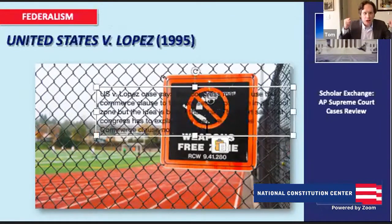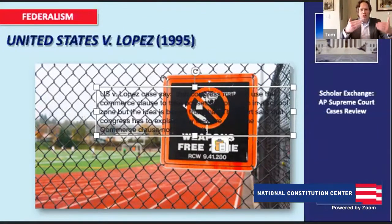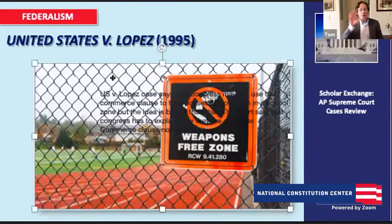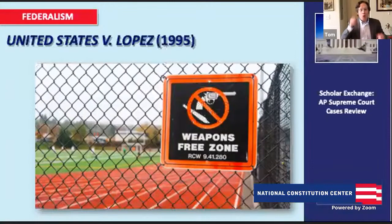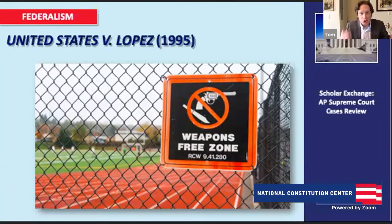Tom Donnelly: The big thing the Rehnquist Court is declaring in Lopez is that the Constitution really does mean it when it says Congress and the national government have limited powers. We've had decades of Supreme Court cases seemingly expanding the powers of Congress, and the Rehnquist Court is saying no, there are still limits. This case involves a student and a national law called the Gun-Free Schools Act. The student brought a gun to school, was prosecuted under that national law, and argued that law is unconstitutional — that Congress doesn't have the power to ban guns in schools because that's not an economic activity. It's a quintessentially local thing.